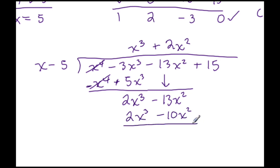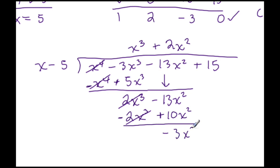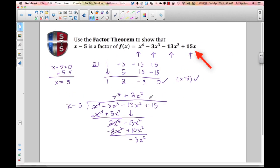We change the signs of both terms: the positive becomes negative and the negative becomes positive. The leading terms cancel, leaving negative 13 plus 10 which gives negative 3X squared. Note: the 15 should actually be 15X, so we place that X there.